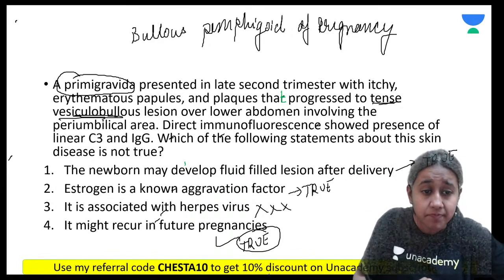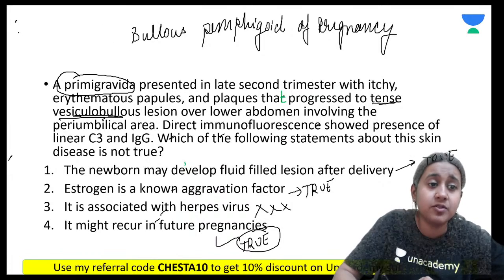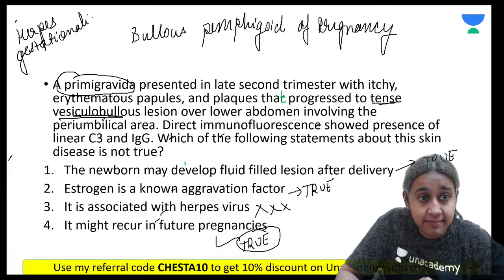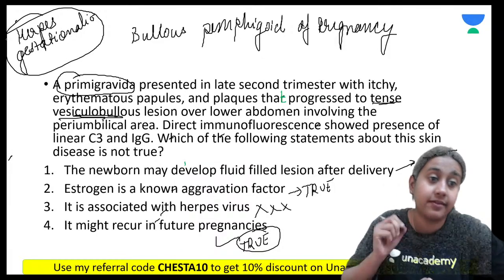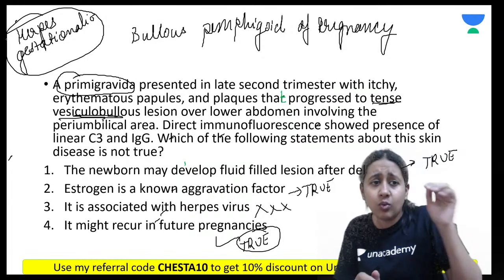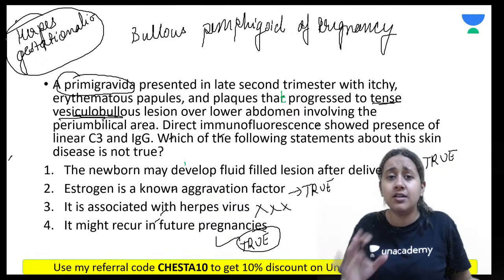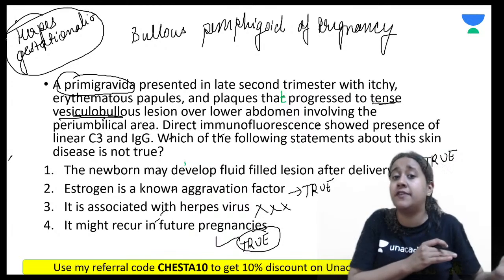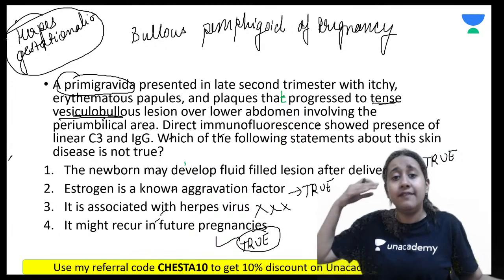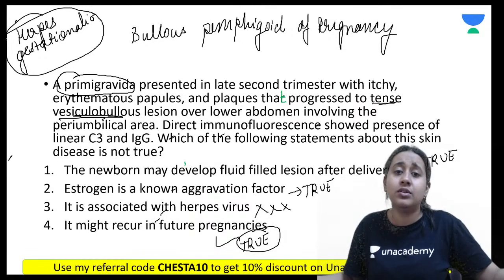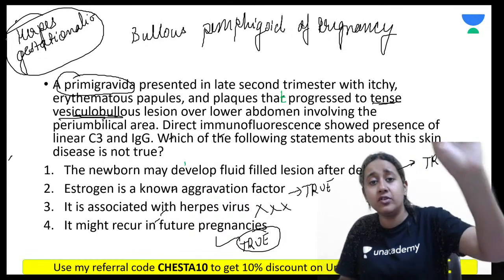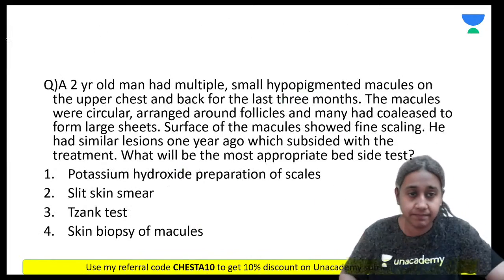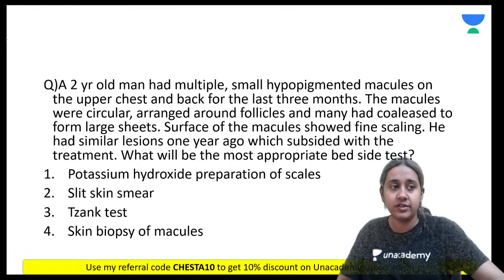Regarding pemphigoid gestationis: neonates may develop vesiculobullous lesions after delivery (true); estrogen is an aggravating factor (true); it is NOT associated with herpes infection — it is an immunobullous condition, so herpes association is false; and it can recur with subsequent pregnancies (true). It was previously called herpes gestationis — a misnomer — because grouped vesicles resembled herpes, but investigations confirmed no herpes involvement.